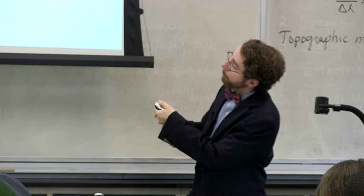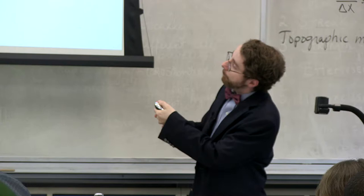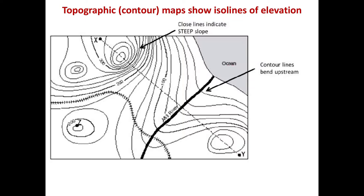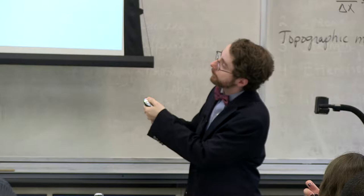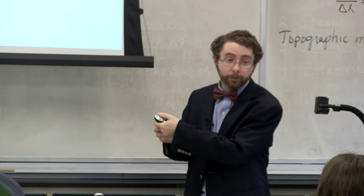The way a topographic map works is you have an iso line with a number indicating the elevation, and then you count towards the next one to figure out the interval in between. So if I have 100 and then 200, then the lines in between will be 120, 140, 160, 180, and then 200. You look to the next number to figure out what your elevation is in between.